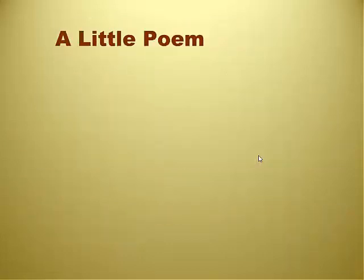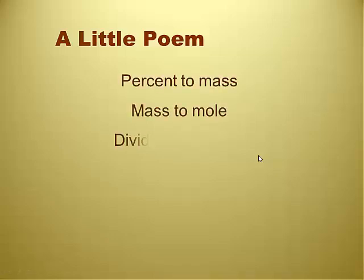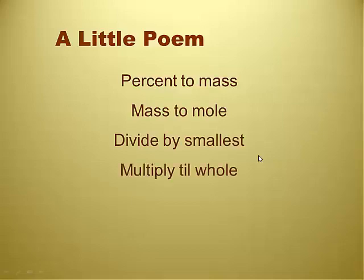Before we do the example, a poem. The poem we're going for is: percent to mass, mass to mole, divide by smallest, multiply till whole. Percent to mass, mass to mole, divide by smallest, multiply till whole. Those are the steps — a nice little poem. So if you have trouble memorizing those four steps, this is easier.